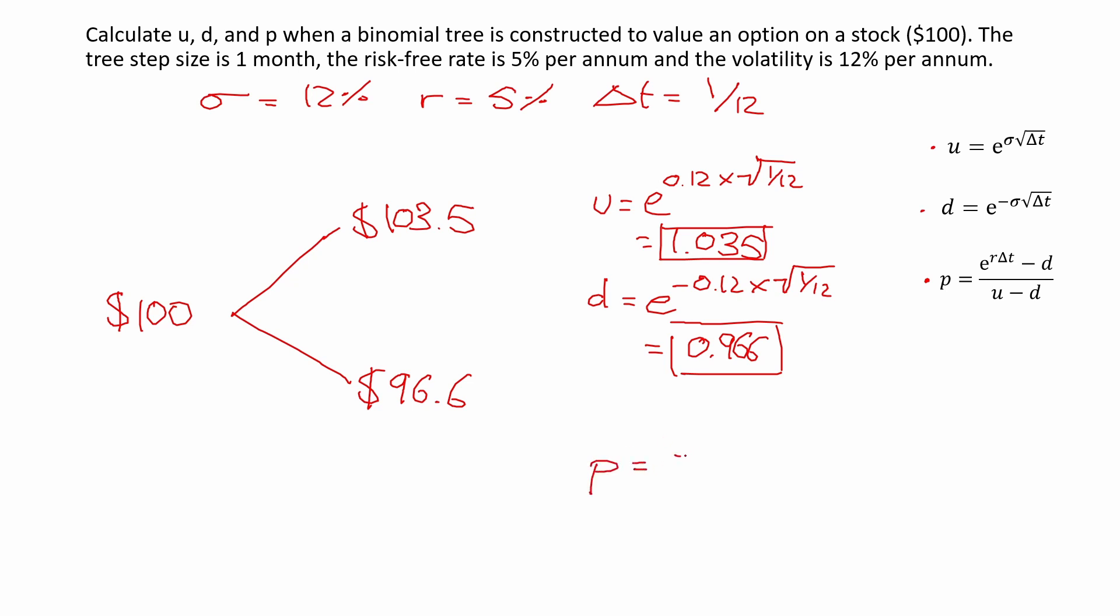So p is equal to e to the power of the risk-free rate in decimal places, which is 0.05, times 1/12, minus d, which we said is 0.966, over u minus d, 1.035 minus 0.966. If you plug this into the calculator, you should get that p is equal to 0.553.